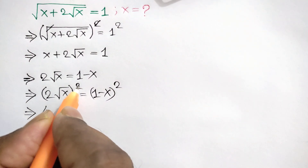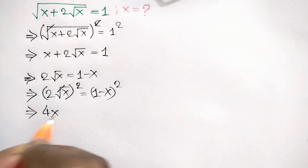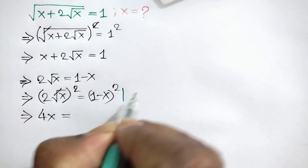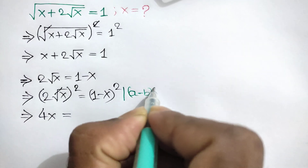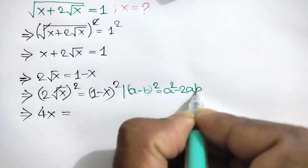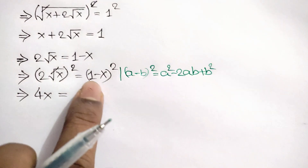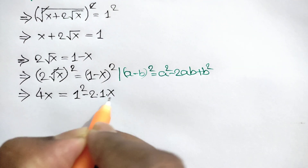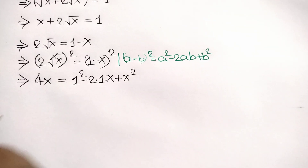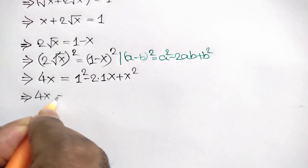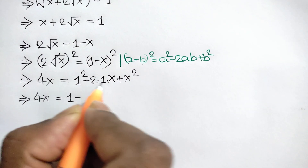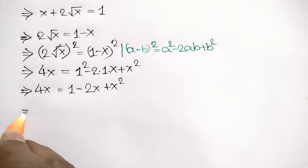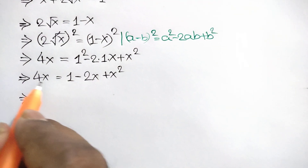We know 2 squared is 4 and this square cancels this square root, so here we will get 4x is equal to 1 minus x whole square. We know the algebraic formula: a minus b whole square is equal to a squared minus 2ab plus b squared. Applying this rule here, we can write: 1 squared minus 2 times 1 times x plus x squared.